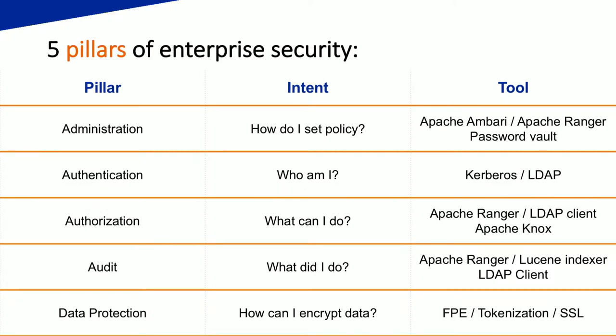After that, we have the five pillars of enterprise security — a lot of white papers on this. We define what the pillars are, what the intent is, and what the tool is. For administration, it's about how do I set policy, what is policy, how do we define it? Once the policy is defined, you need to implement it. For that, we use Apache Ambari and Apache Ranger. For example, we have business units that should not be able to see other business units' data — therefore there must be policies around that.